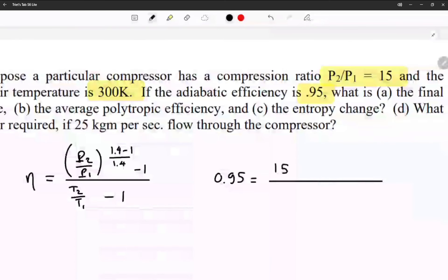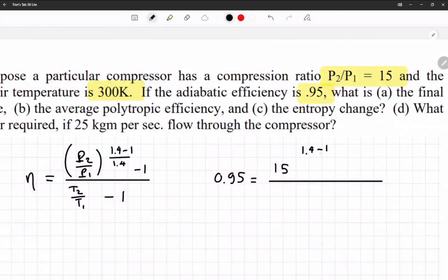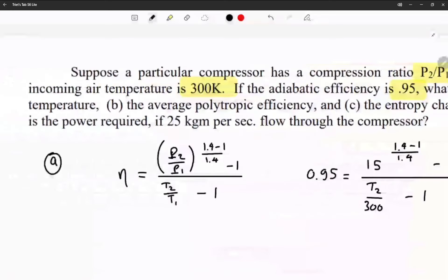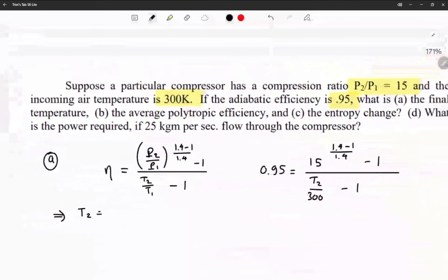ratio is 15, 1.4 minus 1 over 1.4, minus 1. And in the bottom we have T2 is the final temperature, T initial is 300K, minus 1. And then from that I'm able to solve for T2.